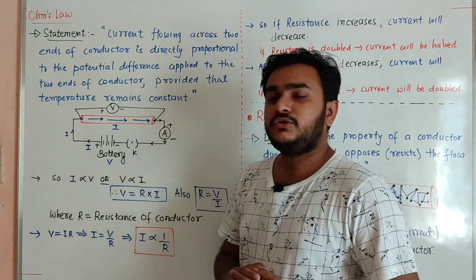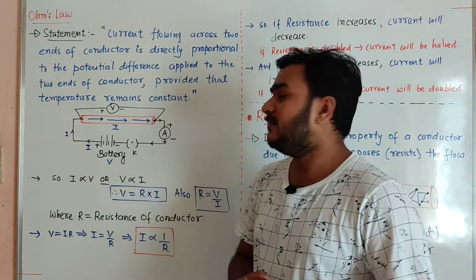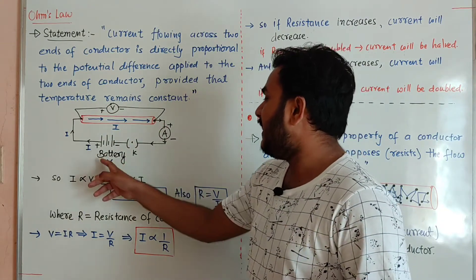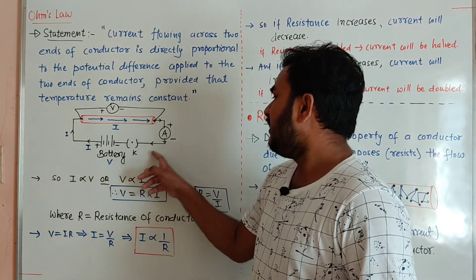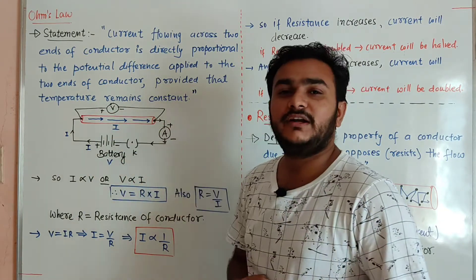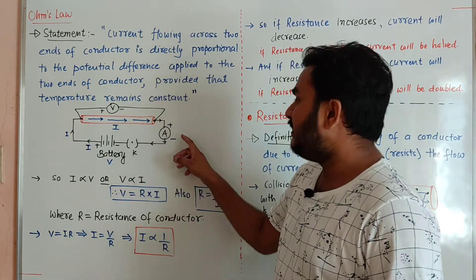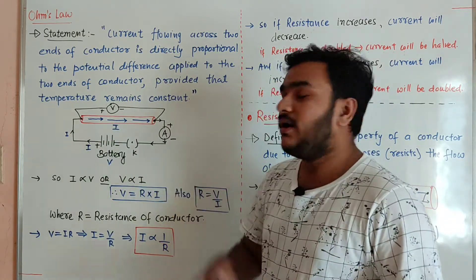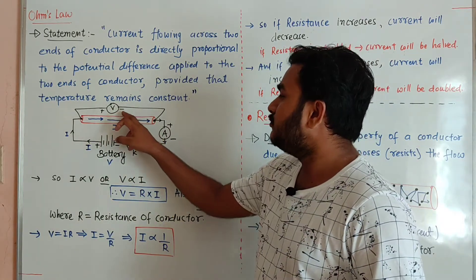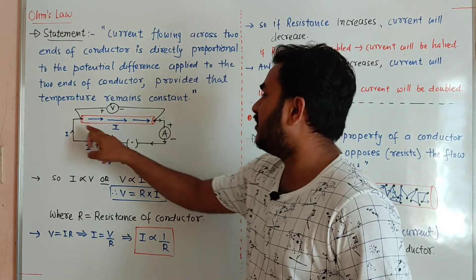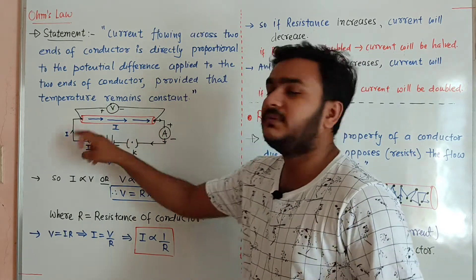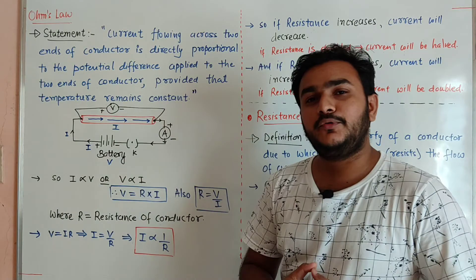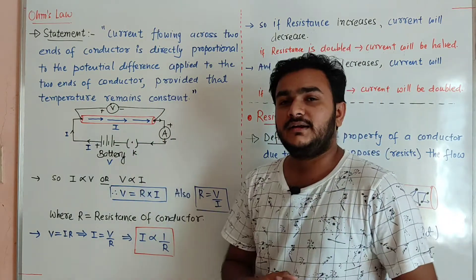Here I have shown the conductor with the red marker, and the conductor is joined with the battery, key, ammeter and voltmeter. The ammeter is used to measure the current through the conductor. The voltmeter is used to measure the potential difference across the two ends of the conductor, and the battery will provide the necessary potential difference to the conductor.